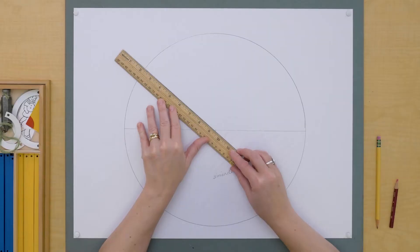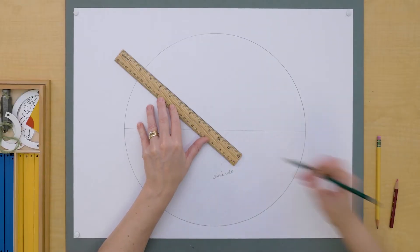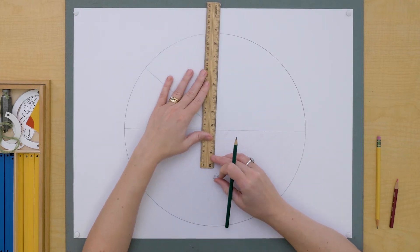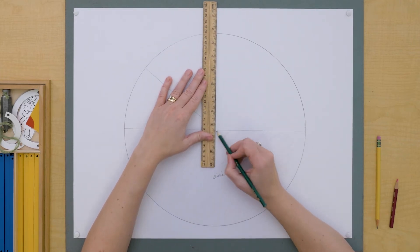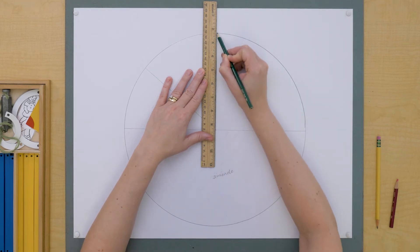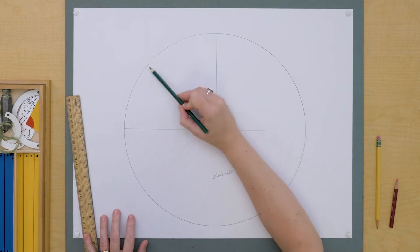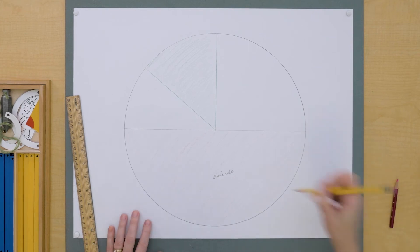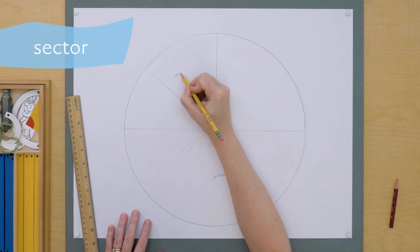Now, there's another. This part of the circle here that is bounded by two radiuses or two radii. This is called a sector of the circle.